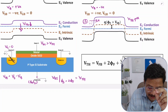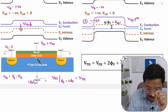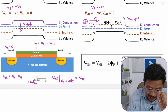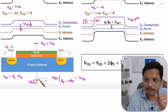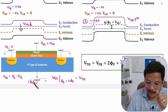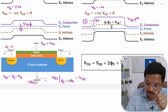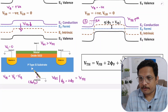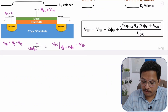Usually the source is shorted to ground in the majority of circuits — remember this for n-channel MOSFET. If VSB is negative, body voltage is positive. If VSB is positive, body voltage is negative. So for this n-channel MOSFET: positive body voltage means threshold voltage goes down, and negative body voltage means threshold voltage goes up.